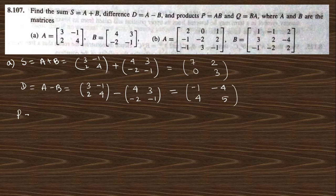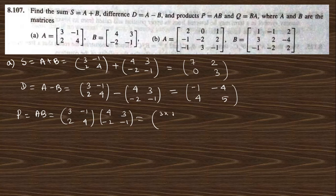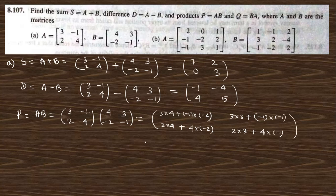Next, P = AB (product): A is [3, -1; 2, 4] into B is [4, 3; -2, -1]. Computing: 3×4 + (-1)×(-2) = 14, 3×3 + (-1)×(-1) = 10, 2×4 + 4×(-2) = 0, 2×3 + 4×(-1) = 2. Then Q = BA (reverse product) gives: [18, 8; -8, -2].